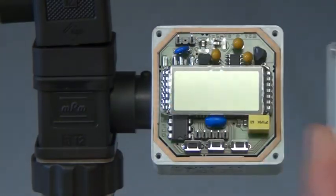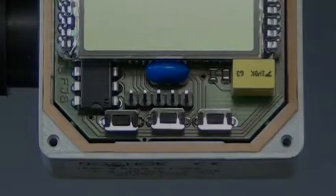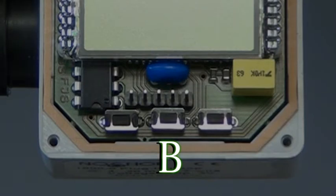To access the programming buttons, remove the faceplate screws. A represents the down toggle, B allows you to step through the programming options, and C represents the up toggle.